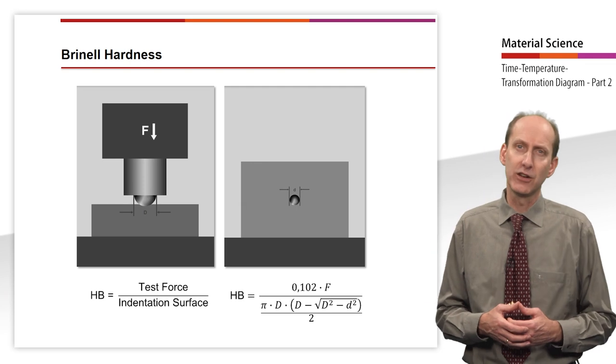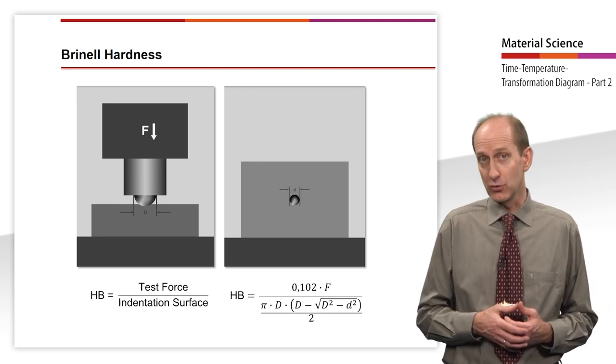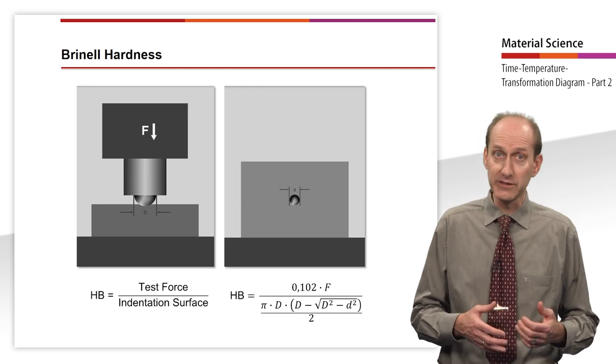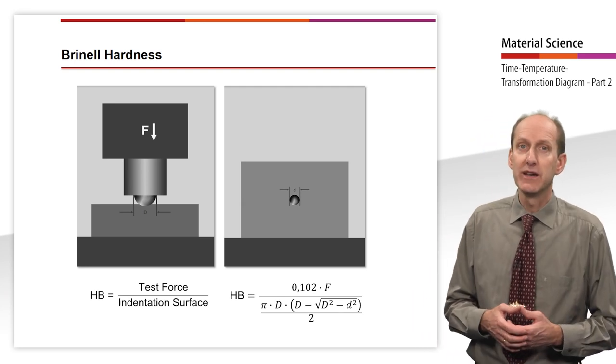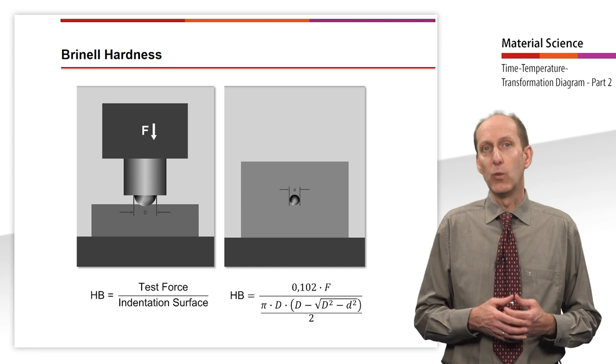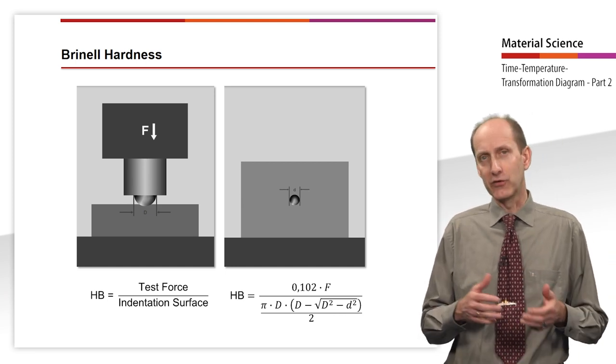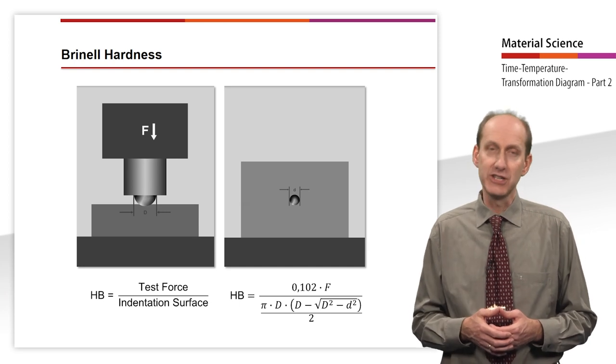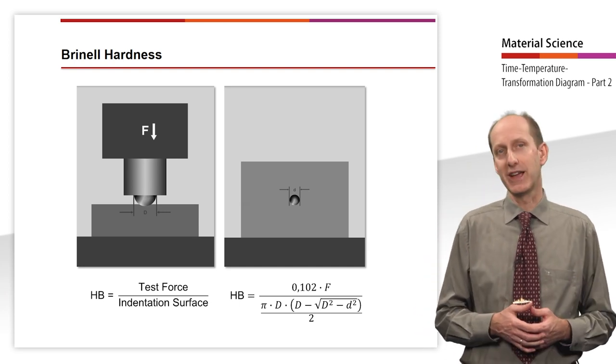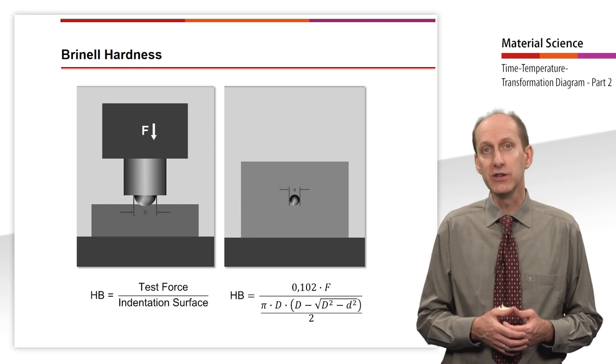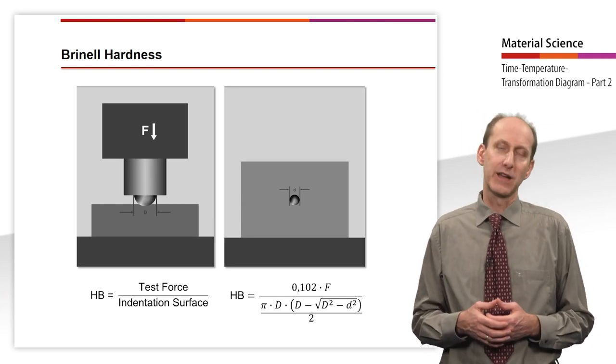At that time the test load was not measured in N, but still in Kp. Therefore, today the test force in N is multiplied by 0.102, that is to say the reciprocal of the acceleration due to gravity G of 9.81, to convert the unit of force N into the older unit Kp.